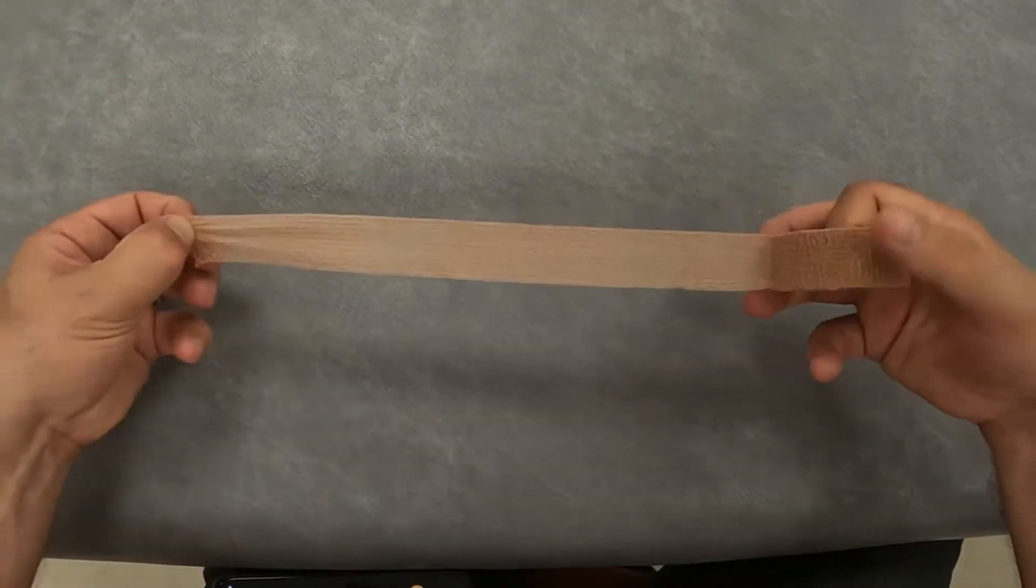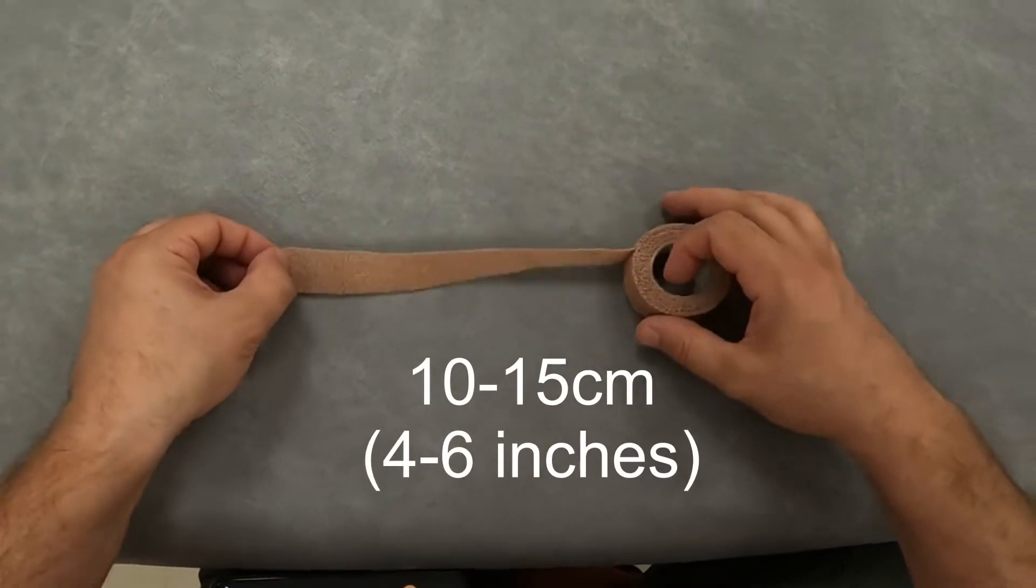For most finger joints, a length of about 10 to 15 centimeters is about right.